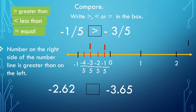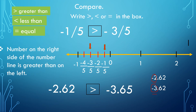What about comparing decimals? We have negative 2.62 and negative 3.65. You can line up these numbers to easily identify the answer. First, compare the whole number part: negative 2 and negative 3. In negative numbers, the greater the number, the lesser the value. Negative 2 is on the right of negative 3 on the number line, so negative 2 is greater than negative 3. Therefore, negative 2.62 is greater than negative 3.65.